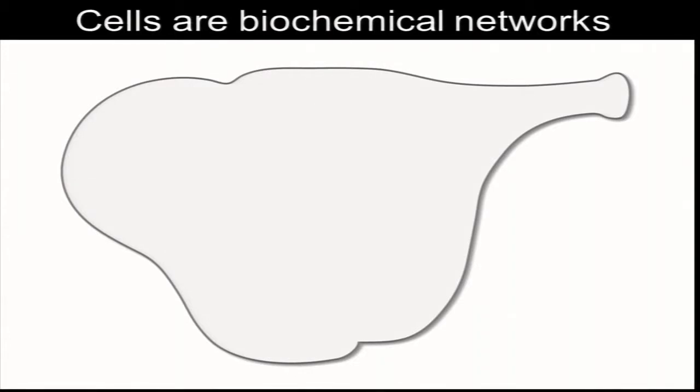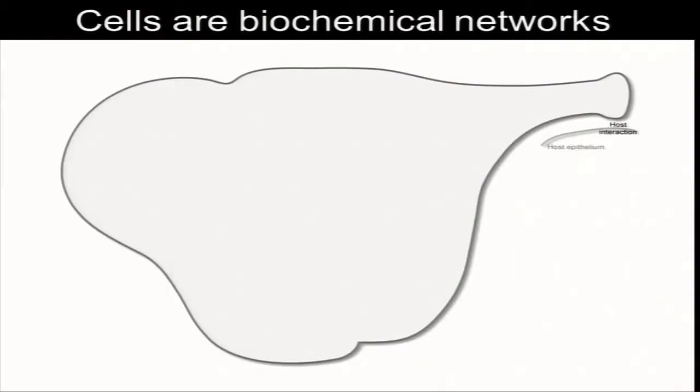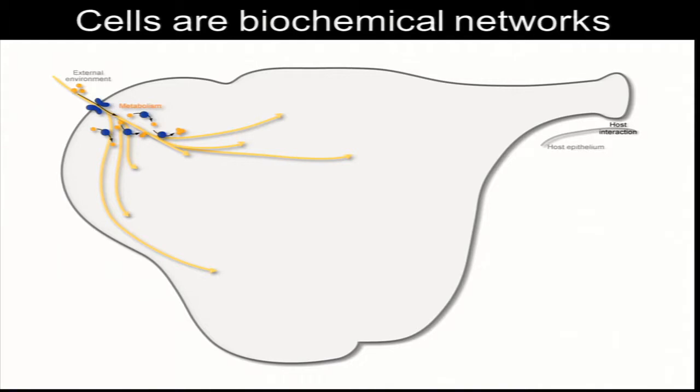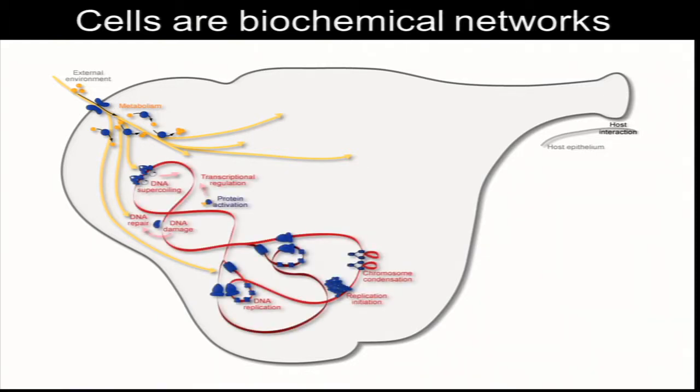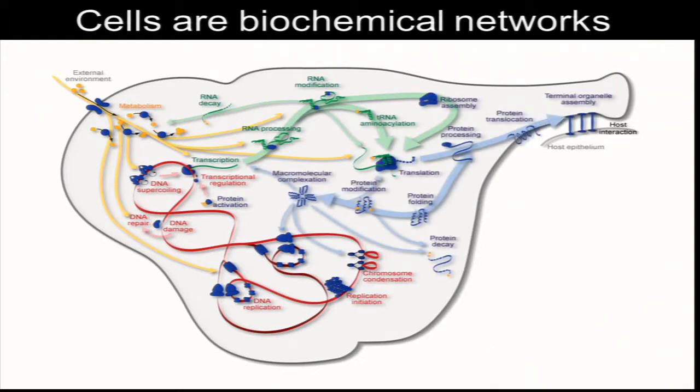Cells are composed of a large number of physiological processes, and each of these processes are carried out by biochemical networks. In the example of Mycoplasma genitalium, it colonizes your genital tract by expressing surface proteins which it uses to interact with epithelial cells. To do this, mycoplasma has to import nutrients, turn them into nucleic acids and amino acids, and use that to synthesize DNA, RNA, and ultimately protein.